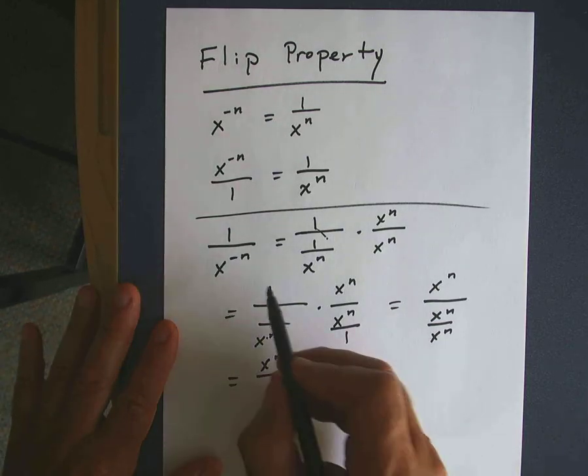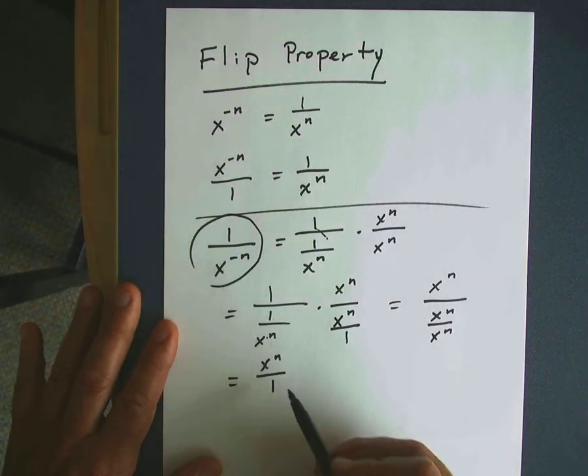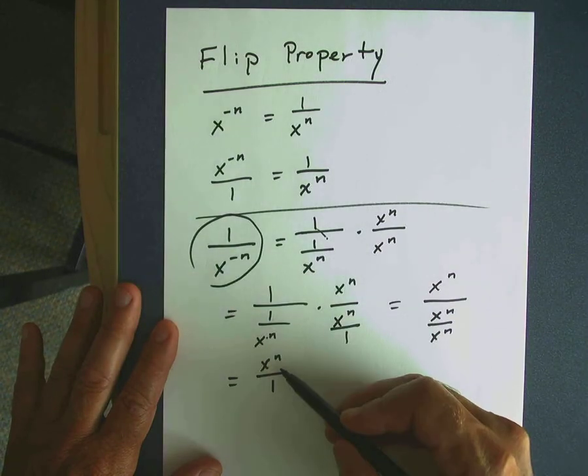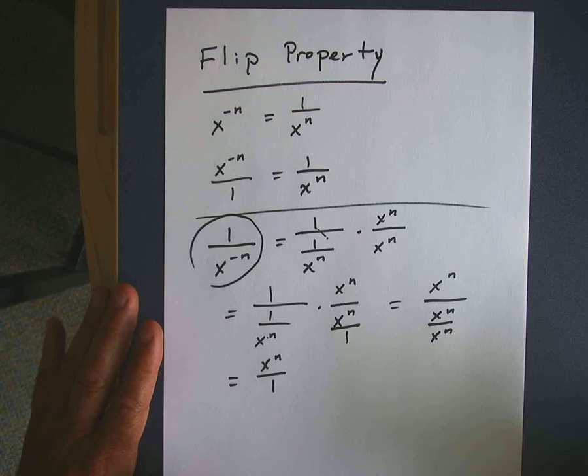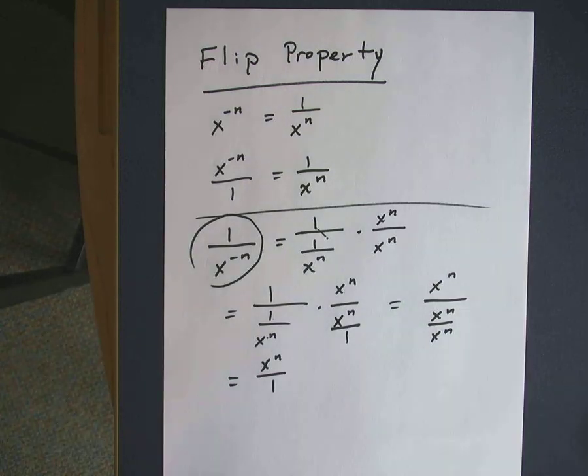So what I've shown is that you can take this expression with a negative exponent, flip it up to the numerator, and rewrite it with a positive exponent. That's what I call the flip property.